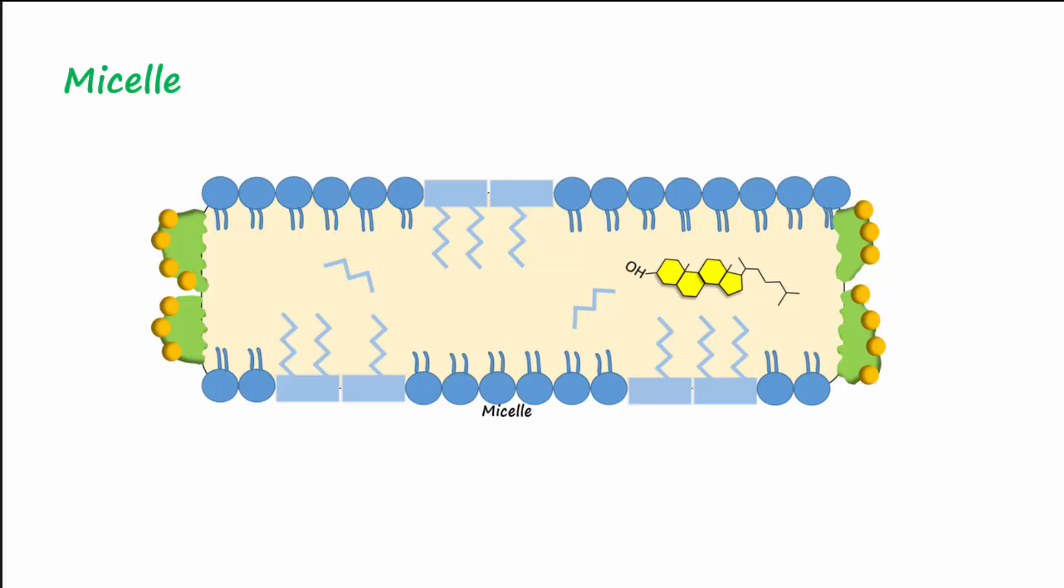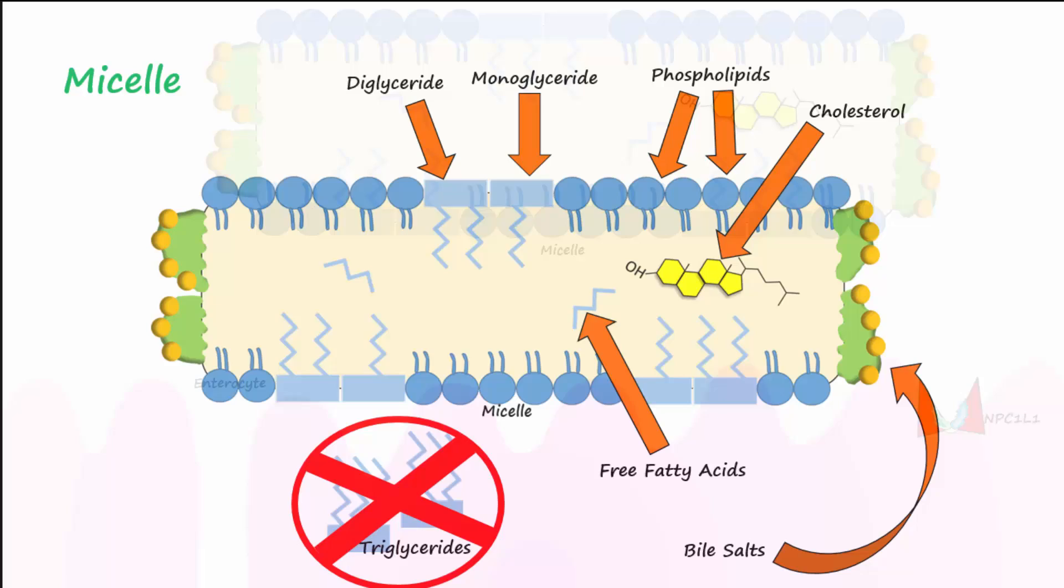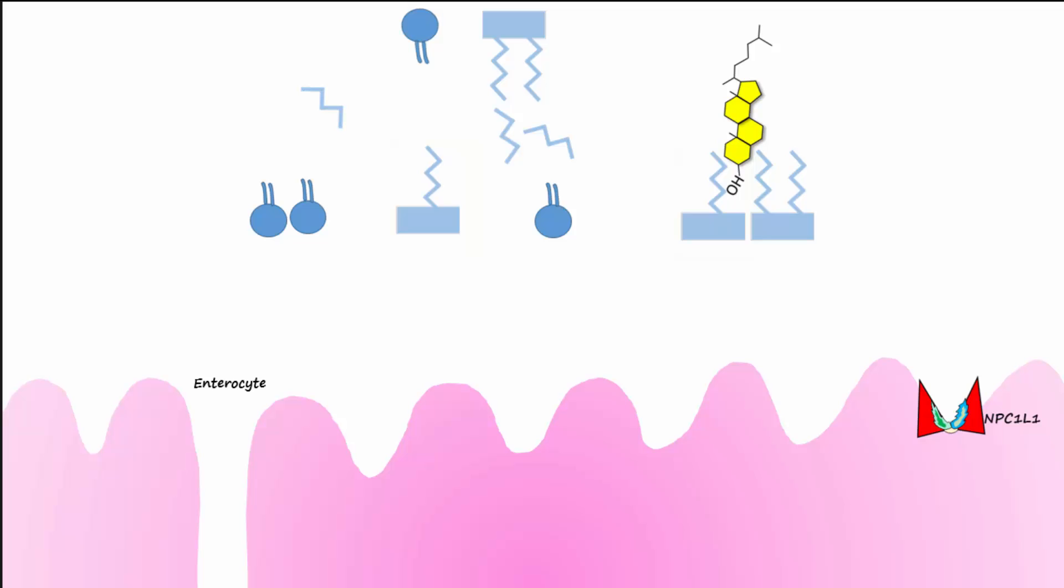Let's identify the components of the micelle. First, there are diglycerides made up of a glycerol and two fatty acids. There are also monoglycerides made up of a glycerol and one fatty acid. There are also phospholipids, cholesterol, bile salts, and free fatty acids. Note that there are no triglycerides in micelles.